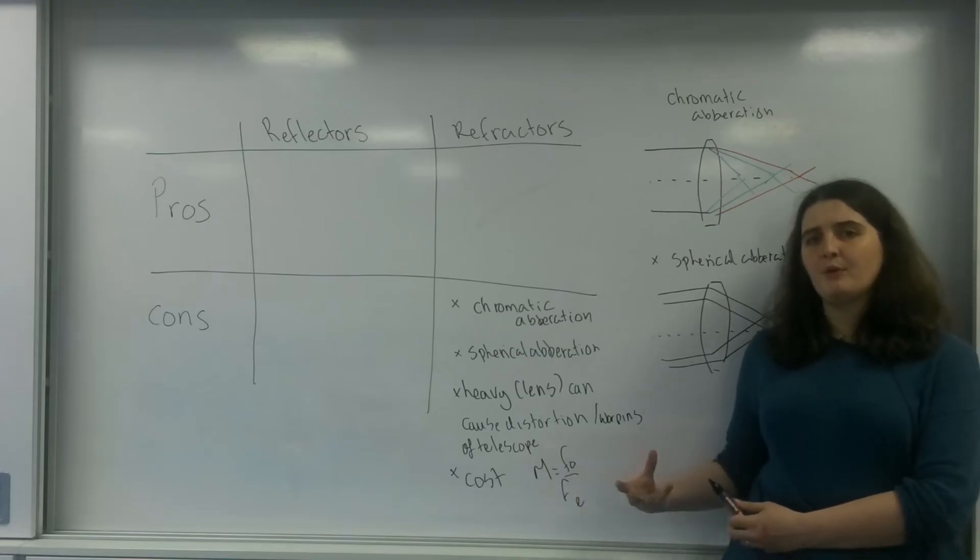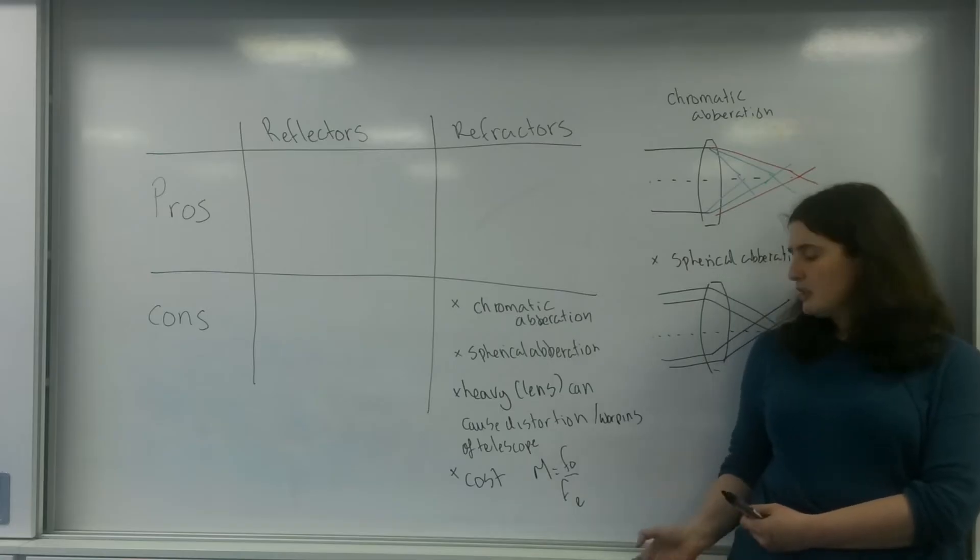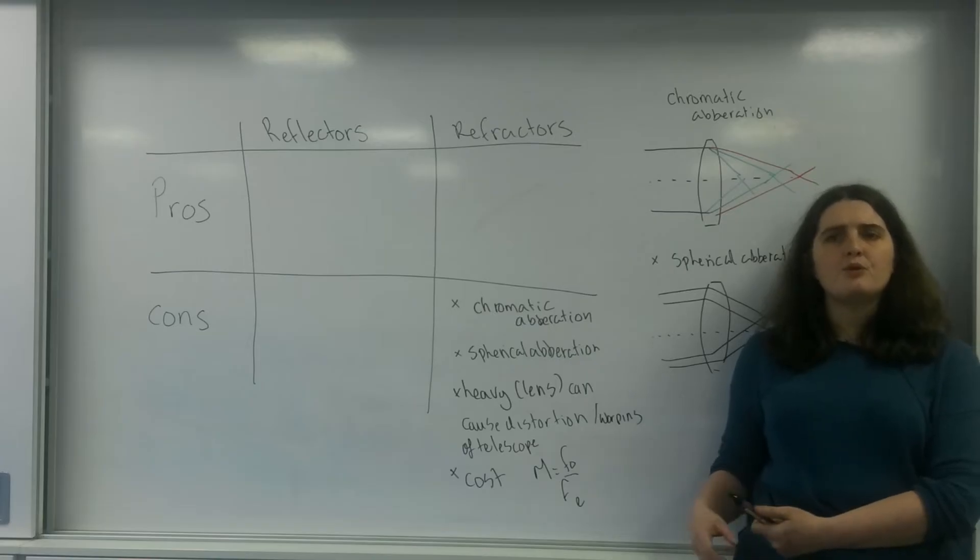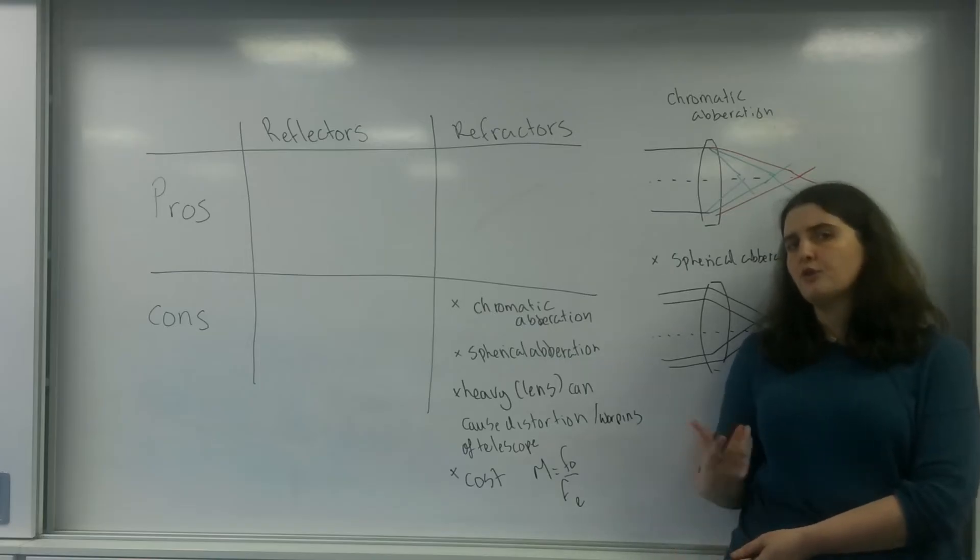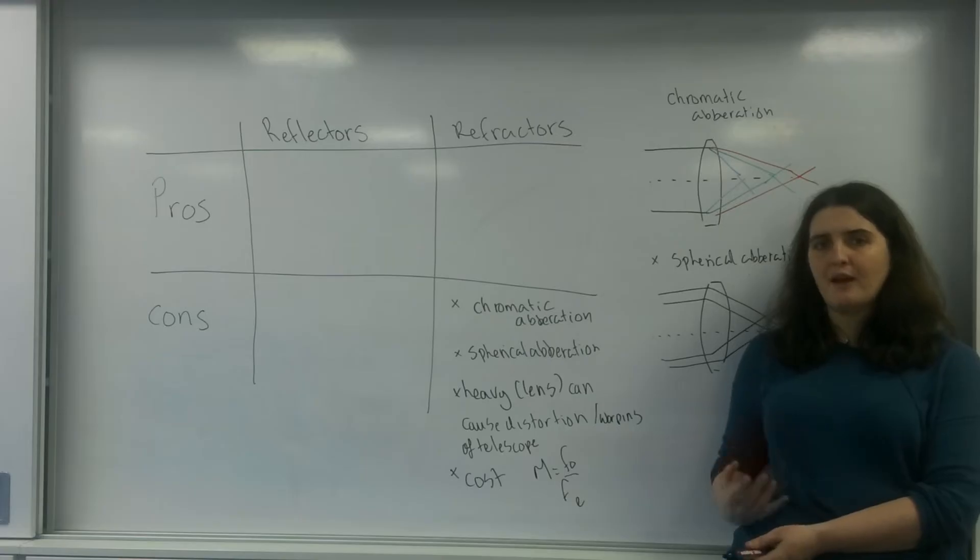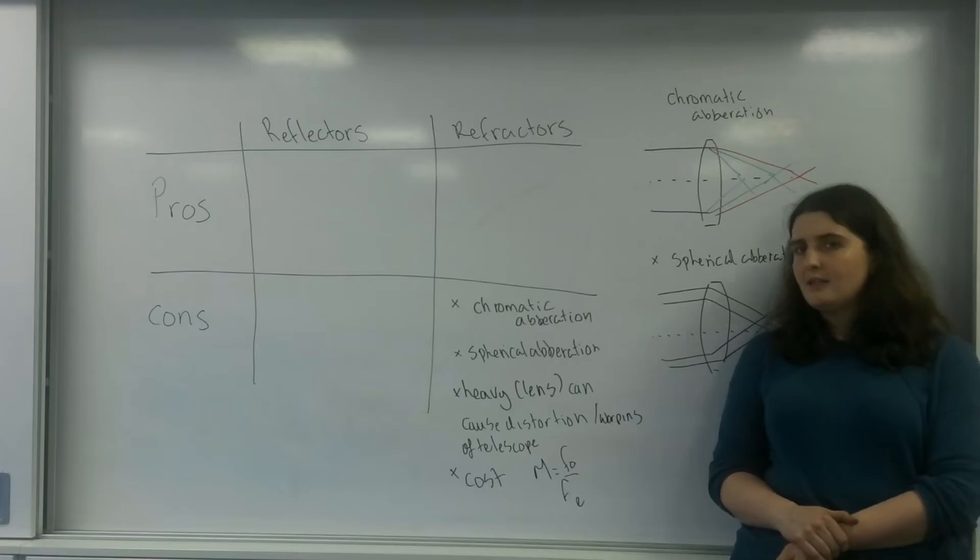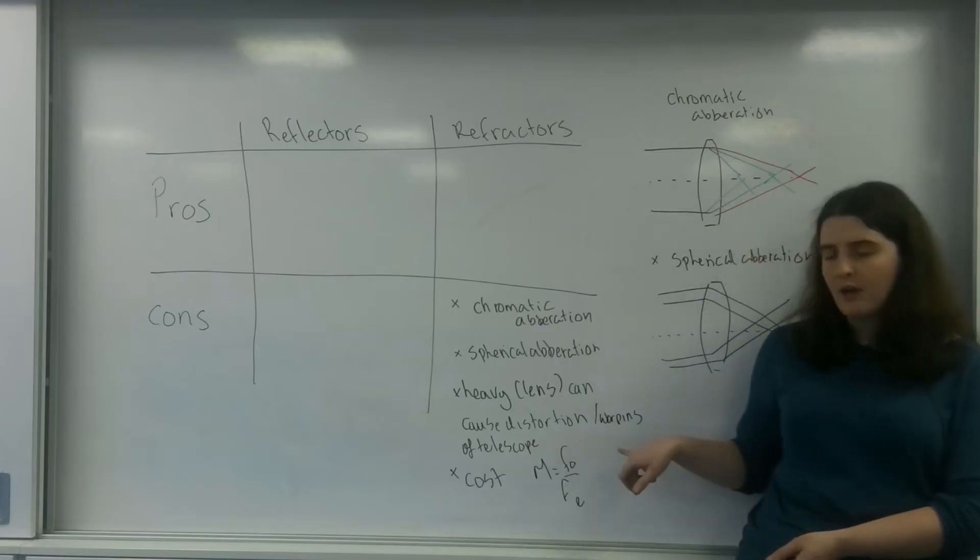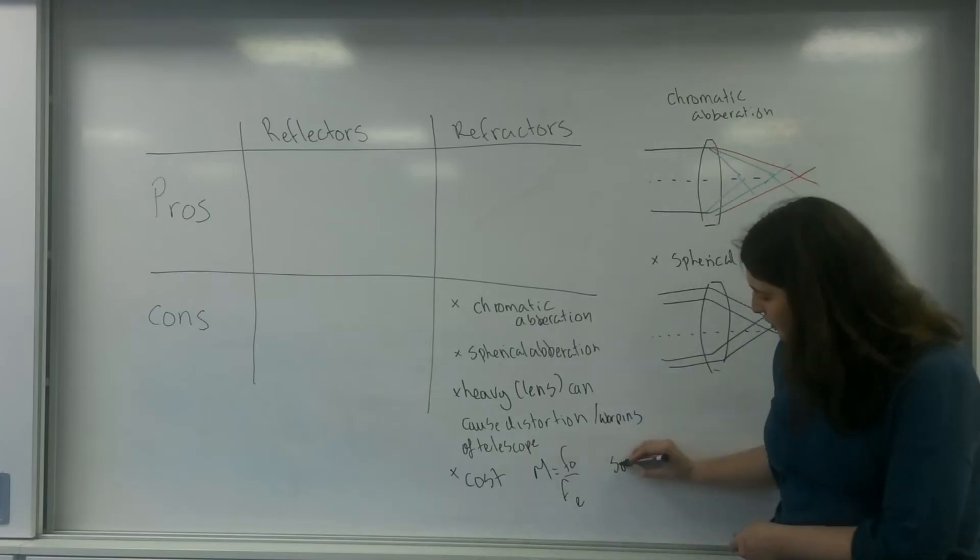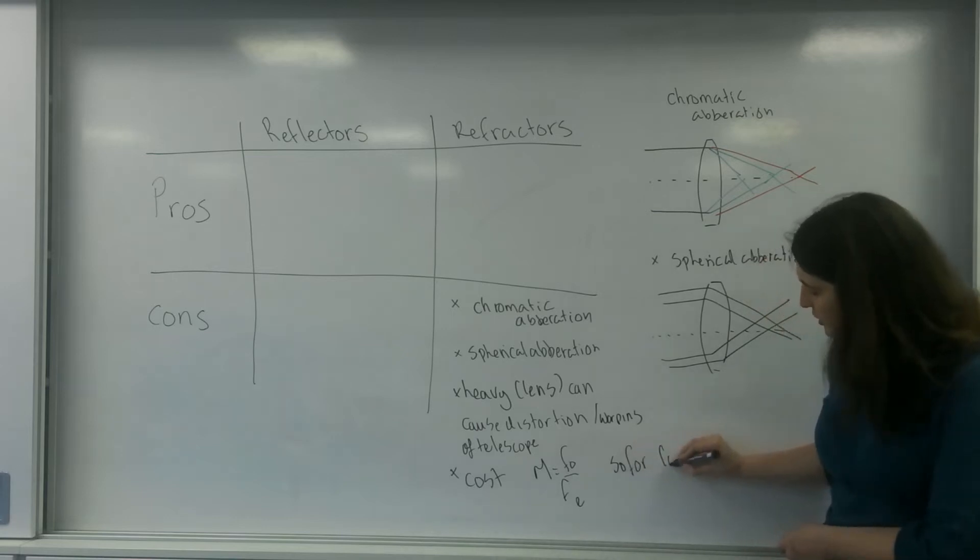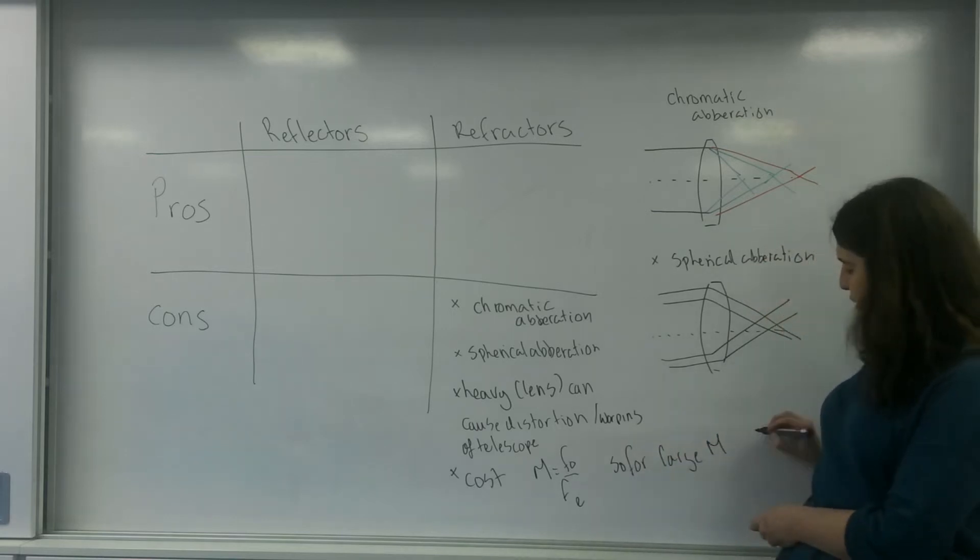If you want a very, very big focal length for the objective lens, you need a very, very, very big lens. If you want a very small eyepiece focal length, you need a very, very small lens. This of course is going to cause a lot of cost because to manufacture, to have very good focal lengths and still be able to use them is very difficult. So this is why they become very expensive. For large magnification you either need a very high FO or a very small FE.